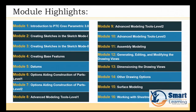The modules include: introduction to PTC Creo Parametric 3.0, sketcher basics and advanced features, datums, creating complex parts (Level 2), advanced modeling Levels 1 and 2, Level 3, assembly modeling, generating and editing drawing views and dimensioning, advanced drawing options, surface modeling, and finally sheet metal design.